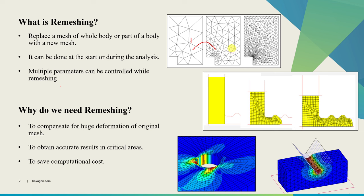While we perform this remeshing, we can control many things. As you can see over here, as remeshing is happening, mesh is getting finer near this corner. And why we need this remeshing is to compensate for huge deformations of the original mesh. Sometimes as simulation progresses, few elements in the original mesh will get deformed by a huge amount and that will cause convergence error, so we won't be able to complete the simulation.